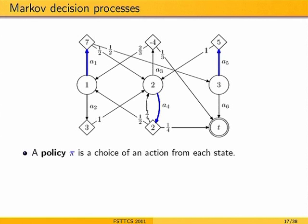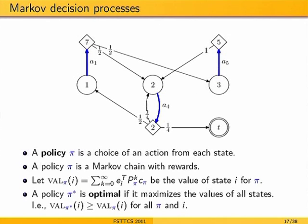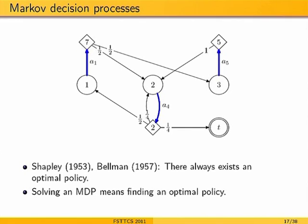Once a policy is fixed, you can define the value of a state with respect to that policy. A policy is optimal if it maximizes the values of all states simultaneously. It is a non-trivial fact that there always exists an optimal policy — a single policy which simultaneously maximizes the expected value for all states. The goal is to find this policy.